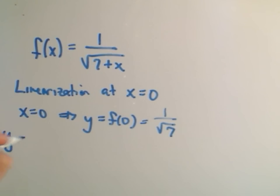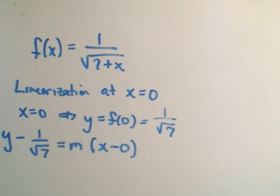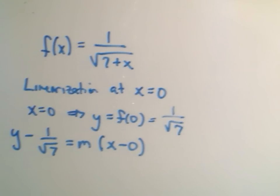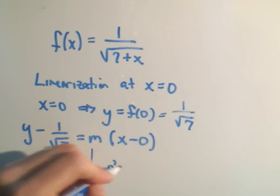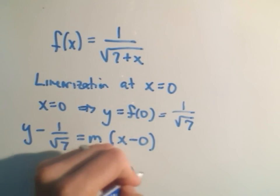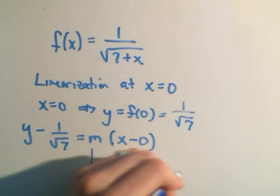So I know that it's y minus the y-coordinate, 1 over root 7, equals the slope, x minus the x-coordinate, which is 0. Well, to get the slope of the tangent line, we know how to get slopes of tangent lines. We simply take the derivative, and then we have to plug in the appropriate x-coordinate, which in this case is going to be 0.